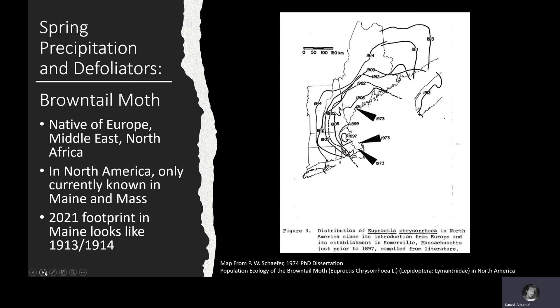Brown-tailed moth is a native of Europe, the Middle East, and North Africa. It was introduced into North America in the late 1800s at about the same time and area as gypsy moth was brought into the country. It spread from that area to encompass parts of New England, New York, and the Maritimes of Canada, reaching its greatest extent in the early 1910s.